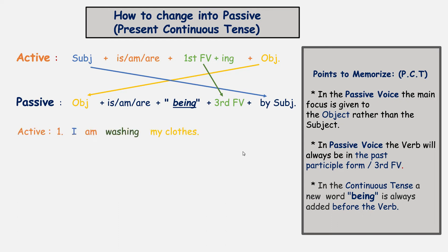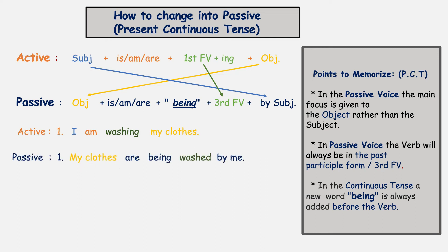The sentence is 'I am washing my clothes' — subject plus is/am/are plus first form of the verb plus -ing plus the object. The object will go in front. 'My clothes' is plural, so we use 'are.' 'Washing' — first form plus -ing — will change into the third form. Do not forget 'being' before the third form. The answer is: 'My clothes are being washed by me.' The subject goes to the back, the object is given more importance in the front.